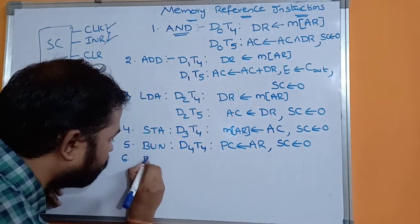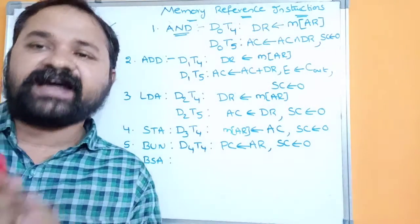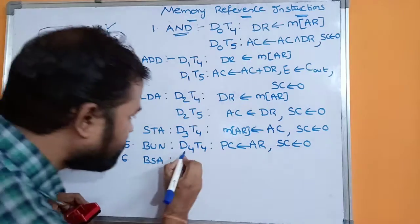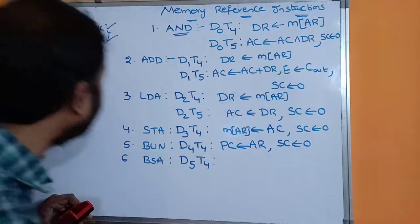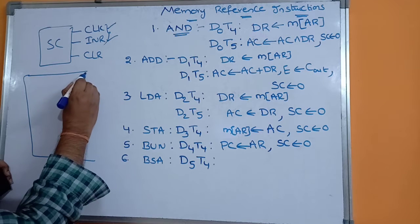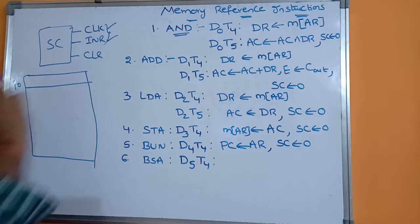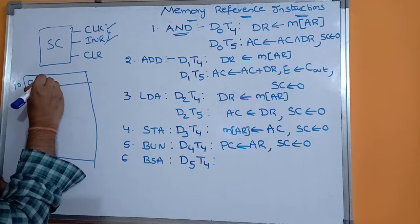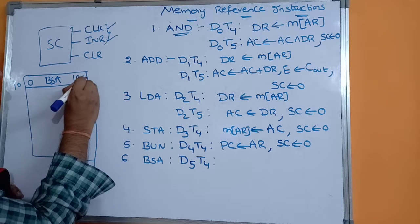The next instruction is BSA, which stands for branch and save return address. BSA is executed when decoded output D5 is active and timing signal T4 is active. Let's take an example: suppose the instruction at address 10 has indirect bit 0 (direct address), the instruction is BSA, and the address field is 100. The next instruction will be at address 11.